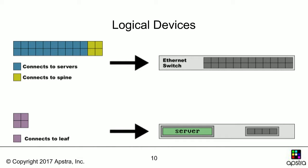What are logical devices? A logical device describes a collection of Ethernet ports on something — for instance, a switch. On the slide, we see an Ethernet switch represented as 24 ports: 20 ports designated to connect to servers and 4 designated to connect to spine switches. Below that, a server has 4 ports designated to connect to leaf switches. Logical devices also define port speeds.